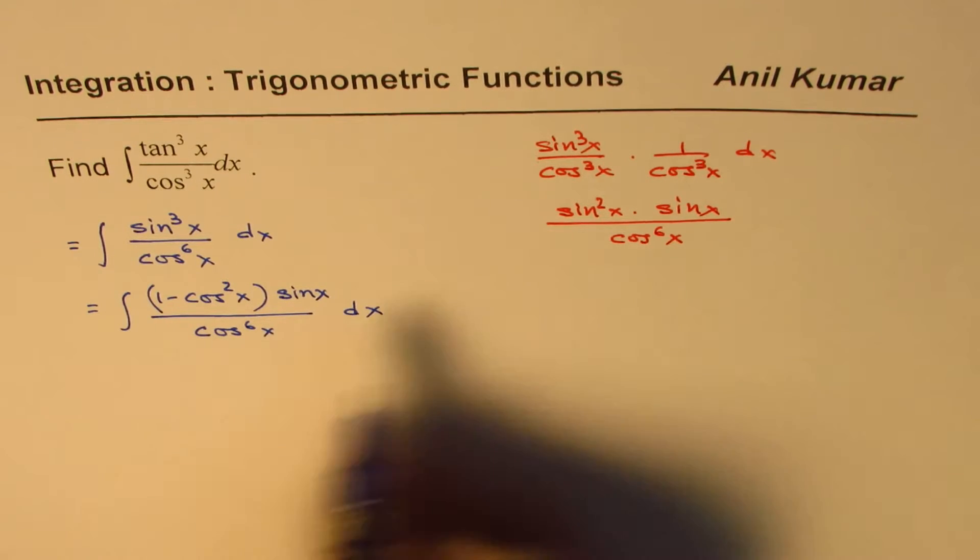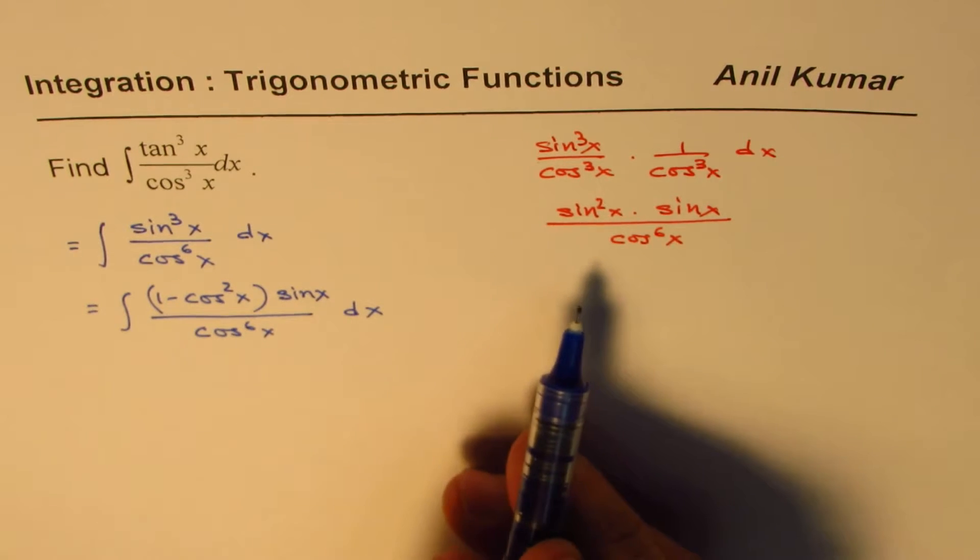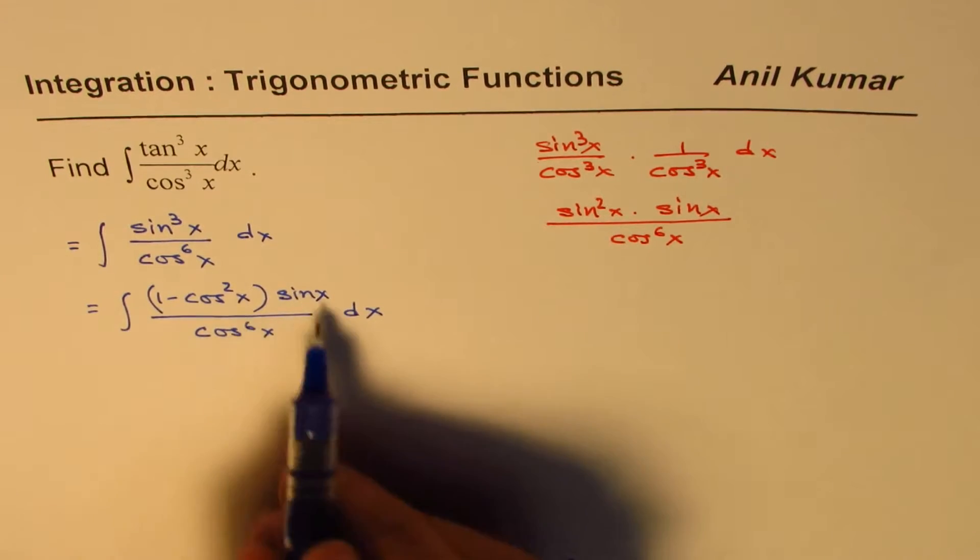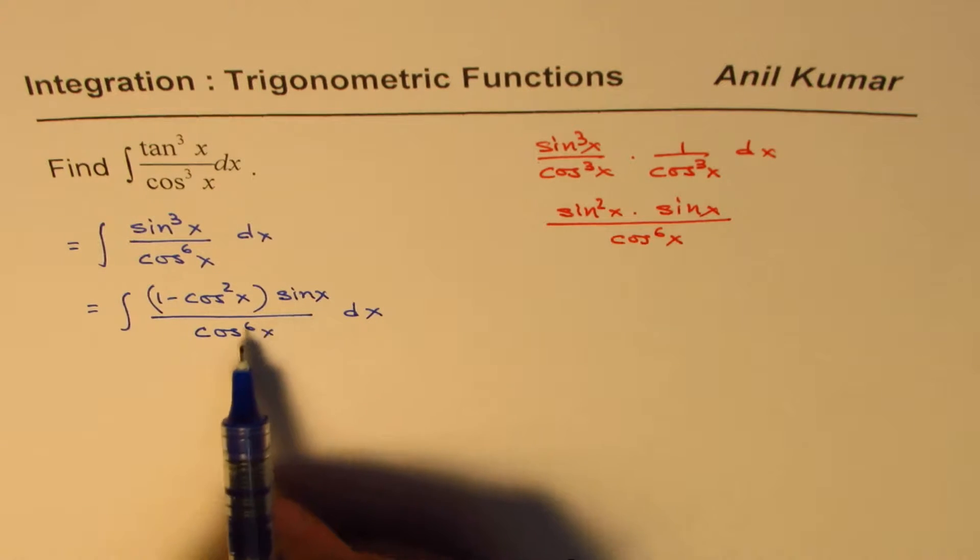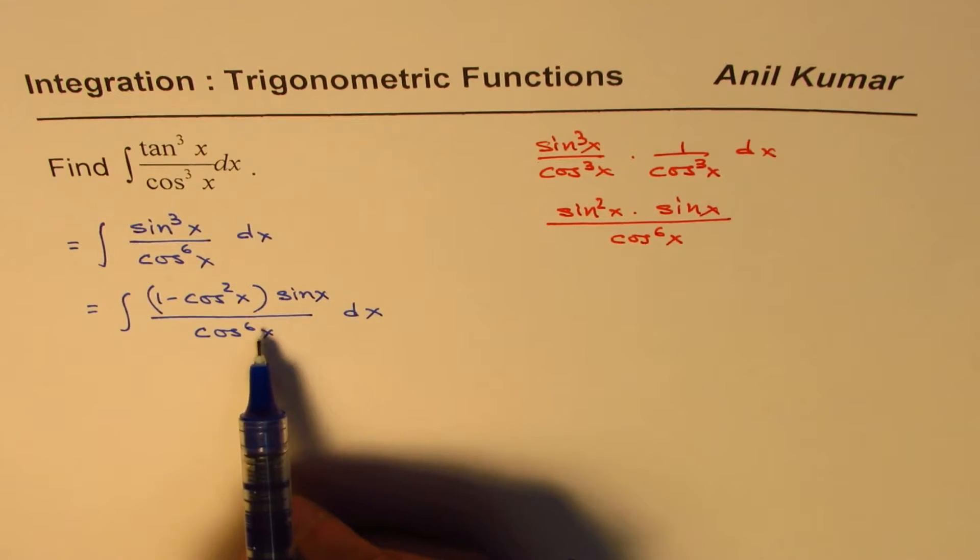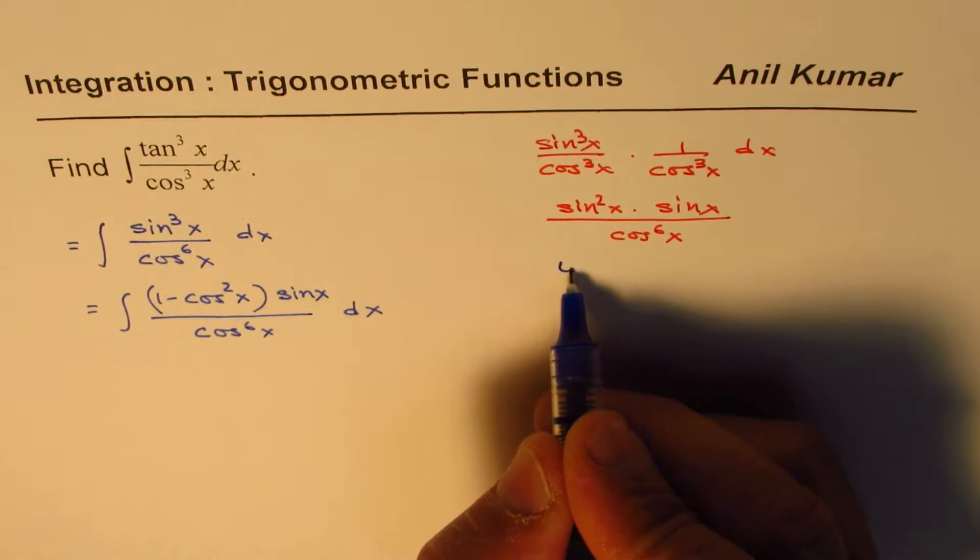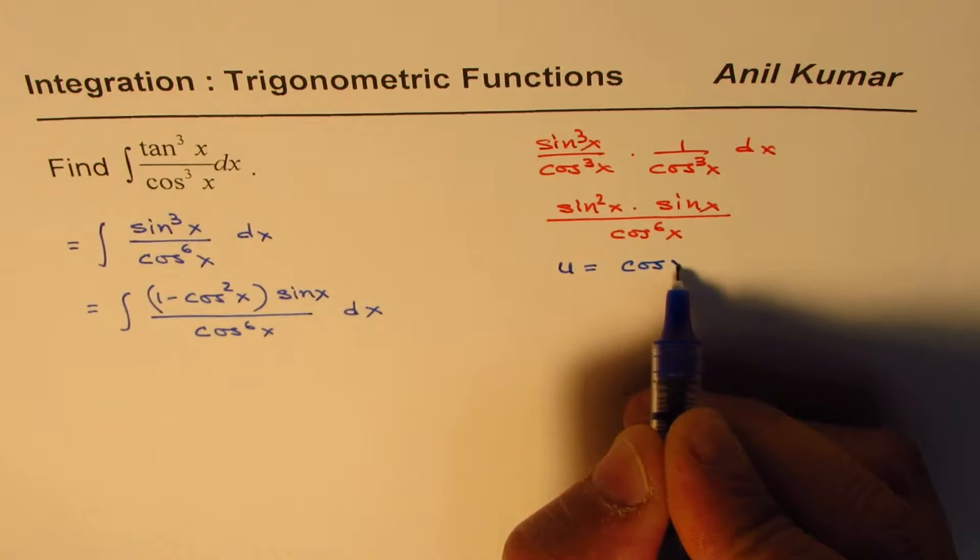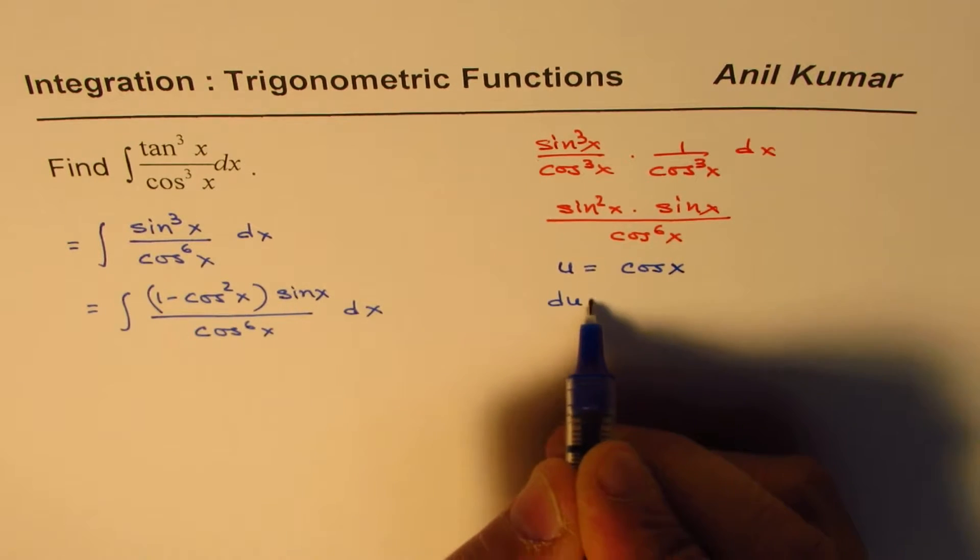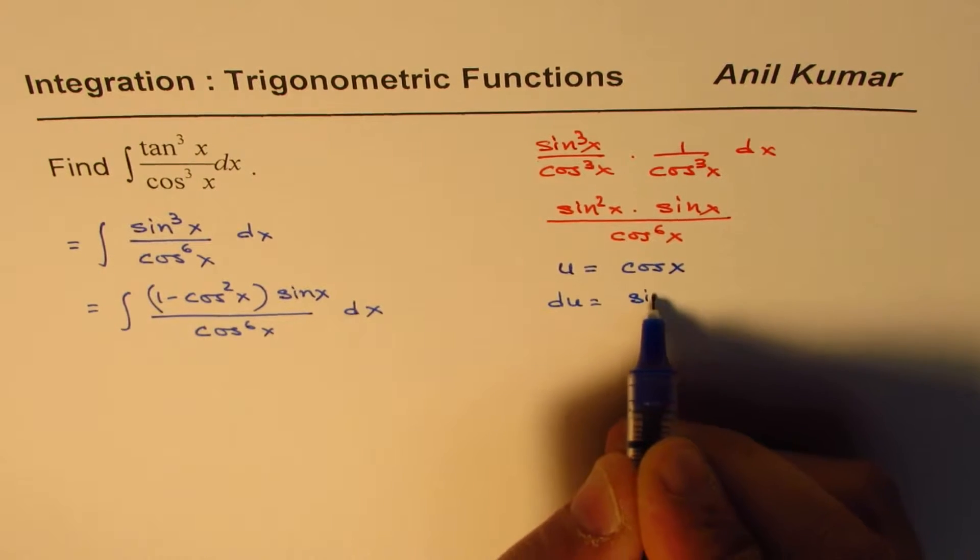So I might skip some steps, but that is how they are. Anyway, now at this stage, we have sine x here, which is derivative of cosine x, so we can make a substitution. A good substitution would be u equals to cos x.